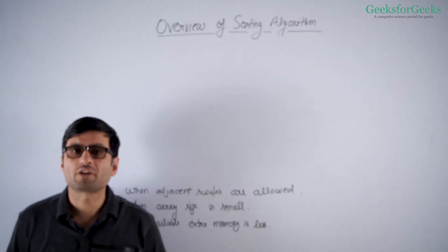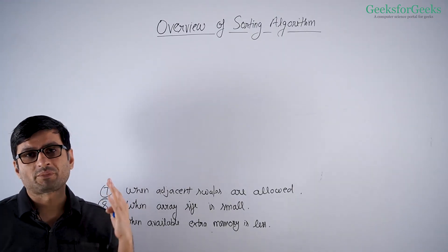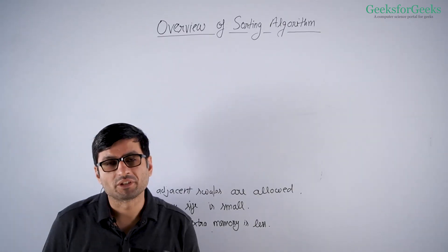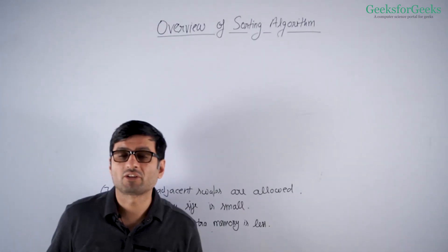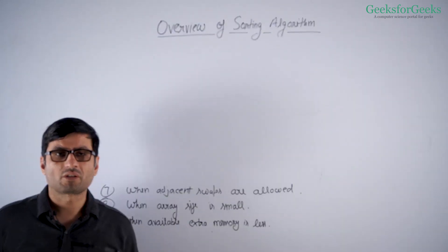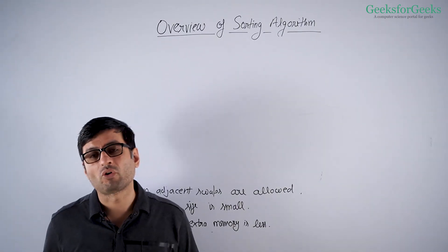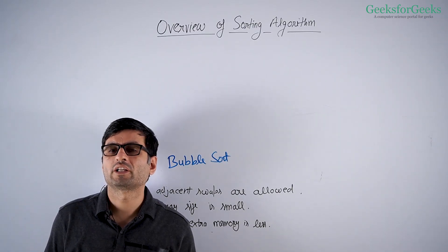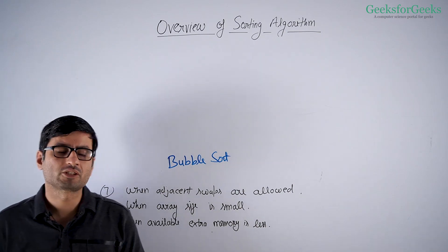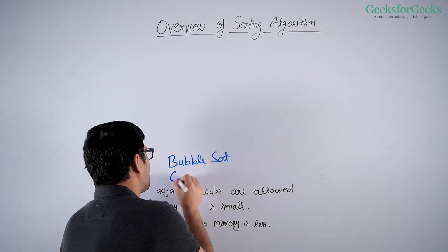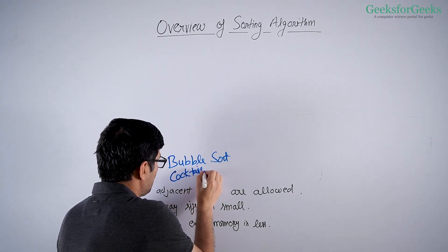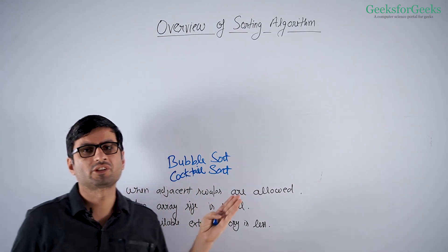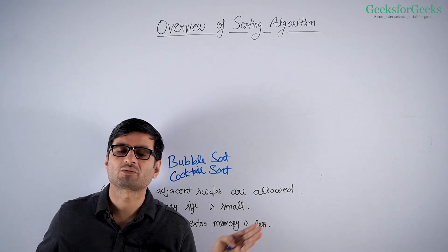In a special situation where you are only allowed to swap adjacent elements, you can use bubble sort. Bubble sort is a sorting algorithm that swaps only adjacent items. There is an optimized version called cocktail sort, which works better in general. Bubble sort travels from left to right, while cocktail sort travels from both sides.